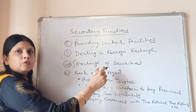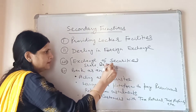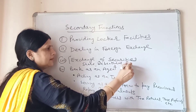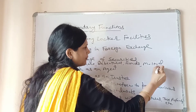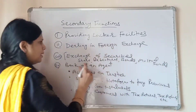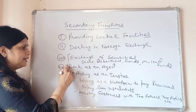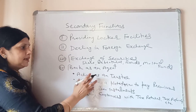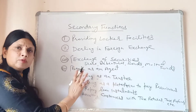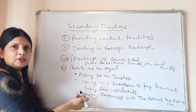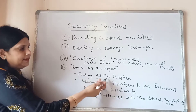The next secondary function is exchange of securities. Banks provide securities to customers including shares, debentures, bonds, and mutual funds. Next is bank as an agent — banks also act as agents for their clients, such as acting as a trustee. If a client needs to apply for a loan from an outside party or enter into a partnership, the bank as a trustee can provide information about a client's banking history.